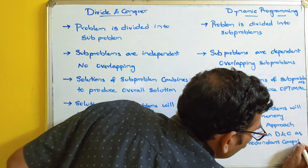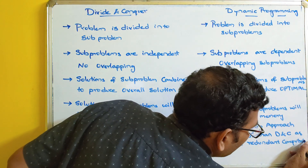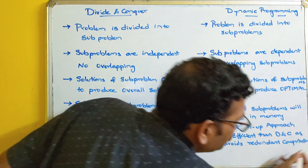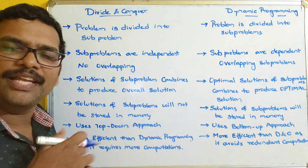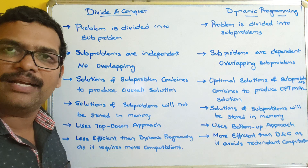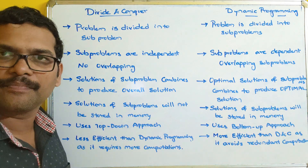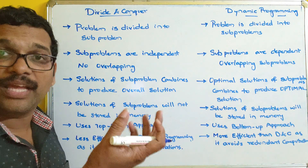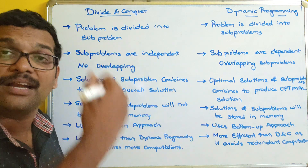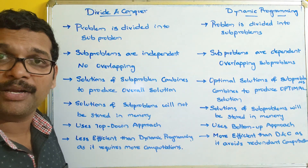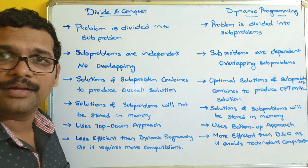Because of the independent nature of subproblems in divide and conquer, we need to perform more computations. But in dynamic programming, once a subproblem is solved, the solution is stored in memory. Whenever it is required, instead of recalculating, we can retrieve the data directly, making it more efficient.